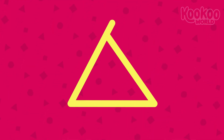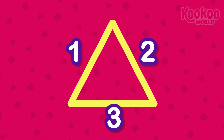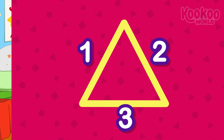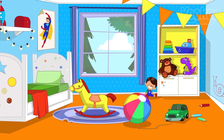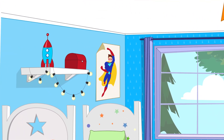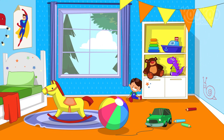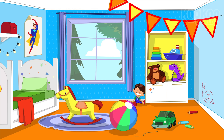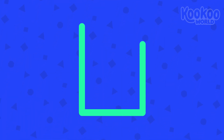This is a triangle — it has three sides: one, two, three. Where can we see triangles in this room? Excellent, the flags have the shape of a triangle.